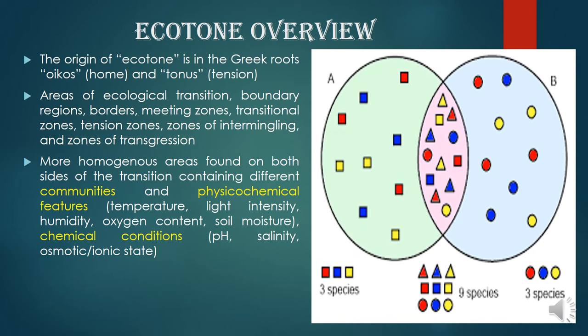Ecotone etymologically has two Greek words: 'oikos' meaning home and 'tonos' meaning tension. It has many definitions — it is called the ecological transition zone, the meeting zone, the border zone, the tension zone, or the zone of transgression. Whatever the name, it is the zone that has common features of both surrounding ecosystems. For example, if A is a forest ecosystem and B is a grassland ecosystem, then ecotone E is the zone between them.